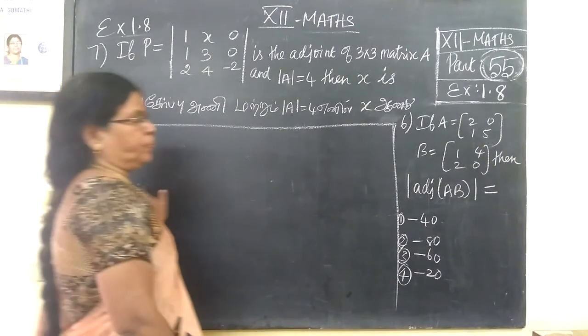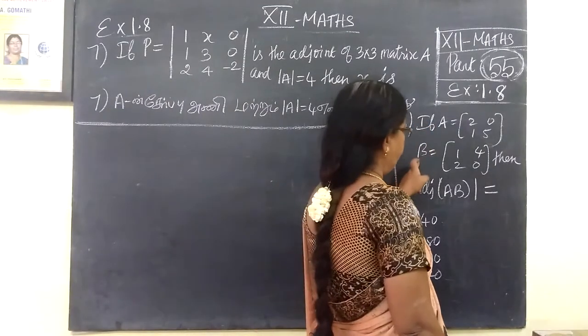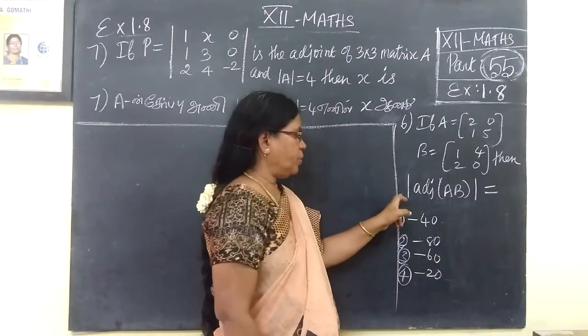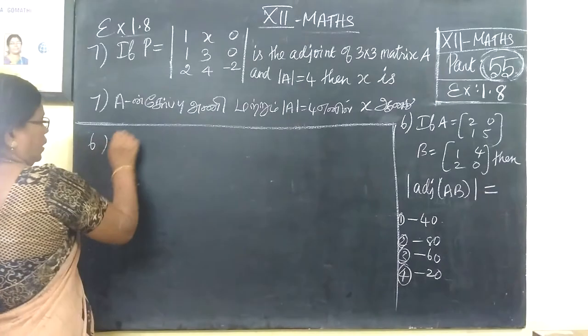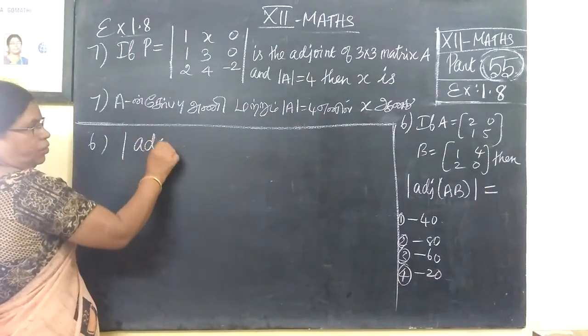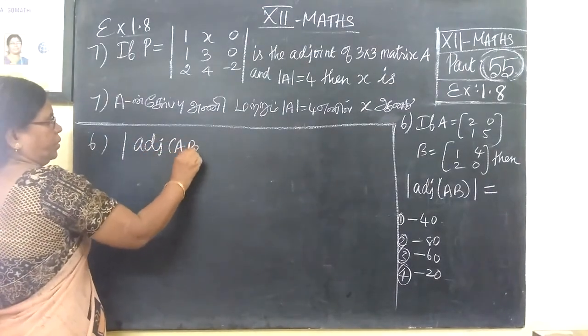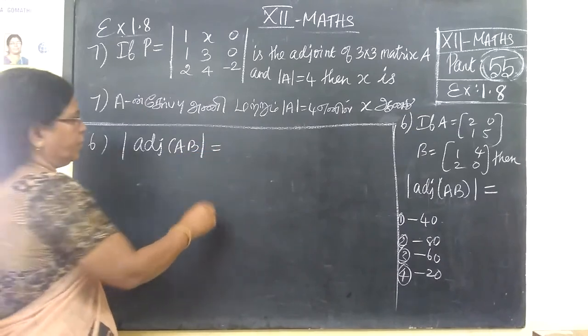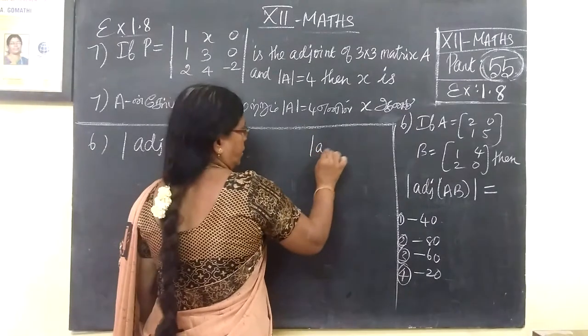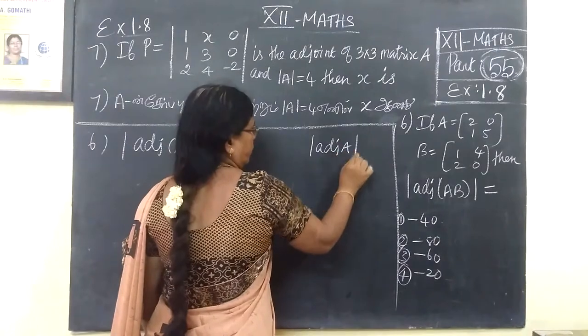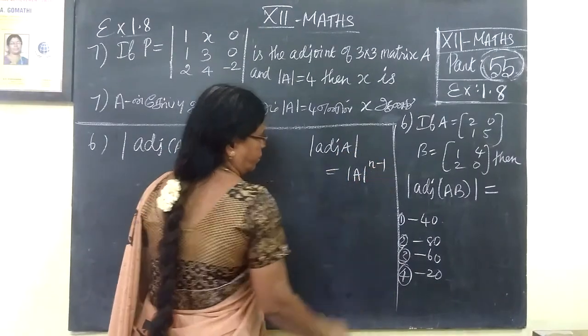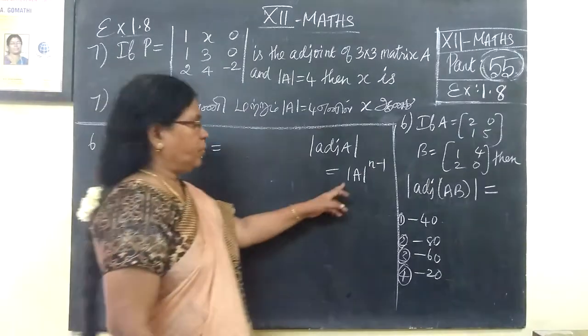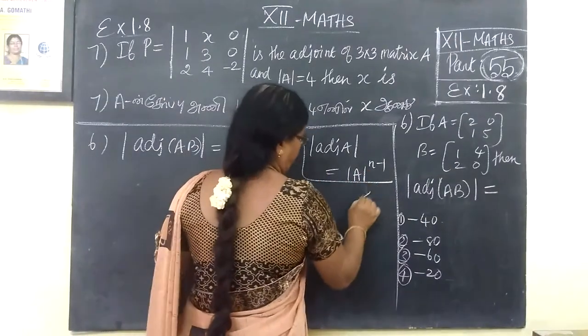Next one is adjugate matrix. Here we are given A and B. When we need to find adjugate of A, the formula is determinant of A raised to power n-1. If A is a matrix, adjugate A is equal to determinant of A raised to power n-1.